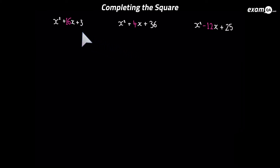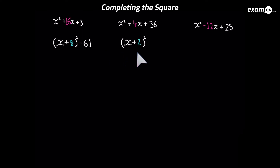For the next one, we put half of 16, which is eight, so it's x plus eight, all squared. Except when we expand this, we get 64 instead of three. Since I'm getting 64 but want three, I simply subtract 61, and it all works out. For the following one, I put half of four, which is two. When I expand this, I get plus four, but I should be getting plus 36. So I need another 32, and I simply just add 32.